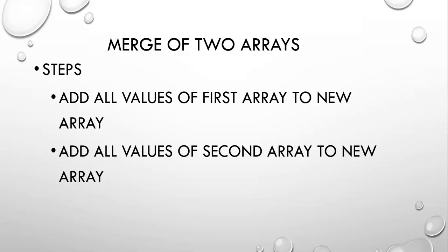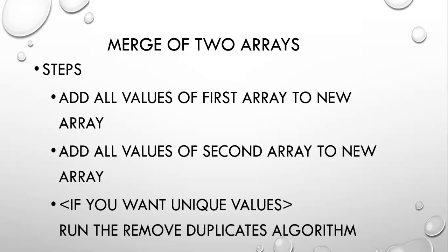Now if you've got multiple arrays that you want to merge, you can keep going through these steps. For example, you've got three or four arrays that you want to merge, so you just keep adding them on to one merge array. The third step you don't have to do, but it's for if you want the array to have only unique values. Say for example there is a seven in the first array and a seven in the second array and you don't want two sevens in your merged array — then you can just run the remove duplicates algorithm. There's a video for that. You can go check out that video and run that algorithm to remove all the duplicates in your merge array, so you'll have only the unique values from both arrays.